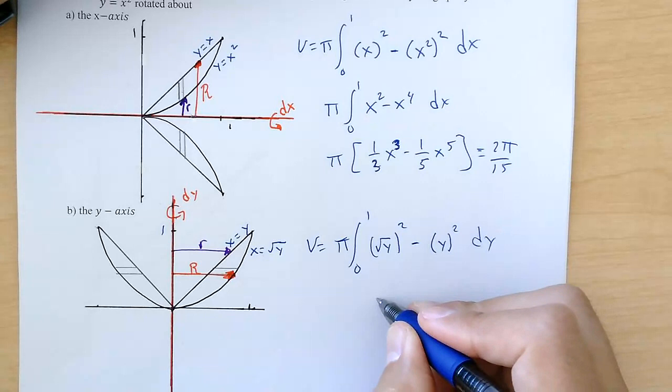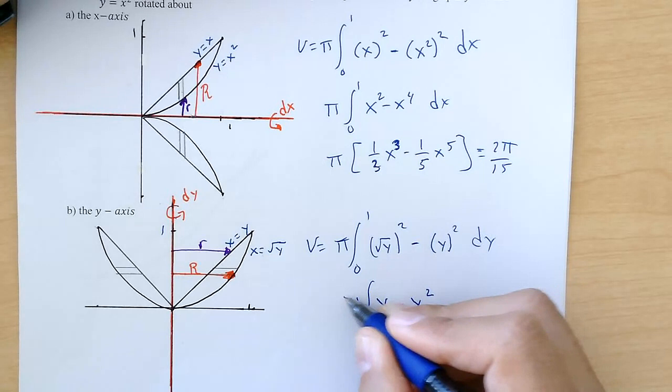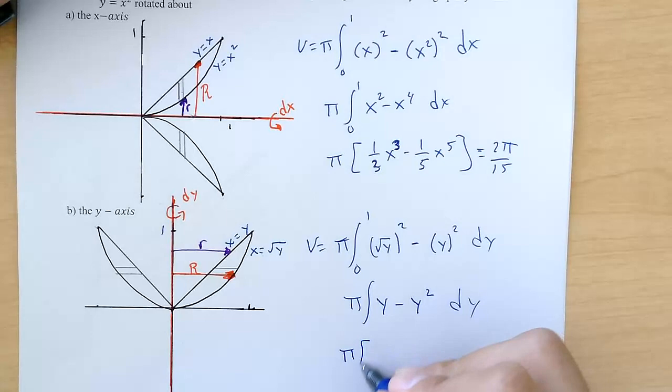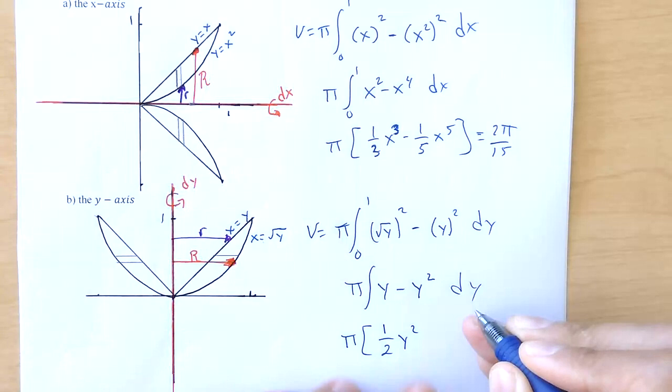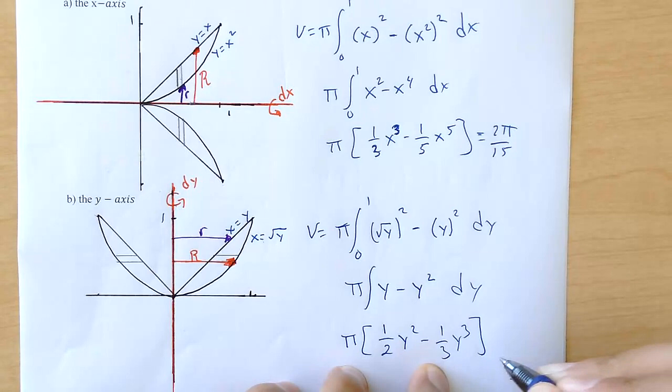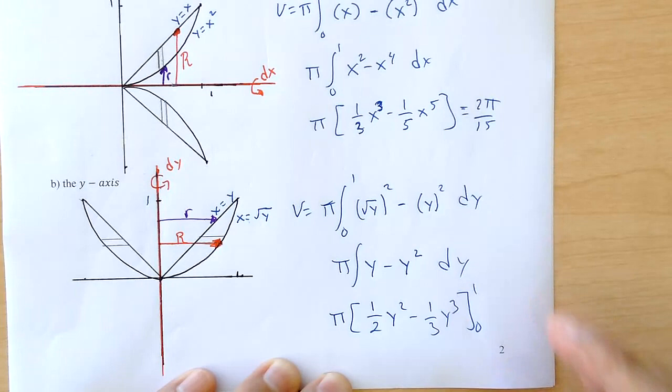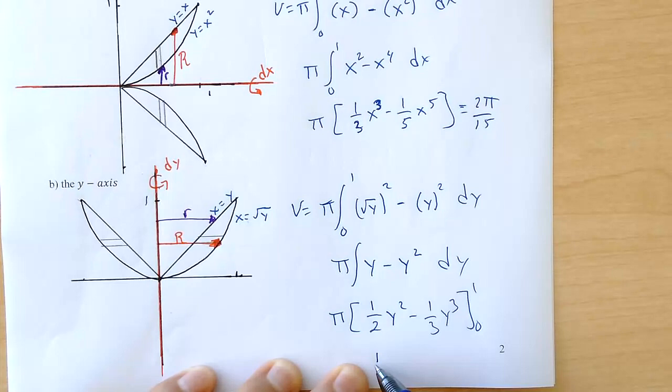So again, not that bad. We can square each one of those, we can integrate that correctly this time, and on this one when I rotate about the y-axis I end up with π over 6.